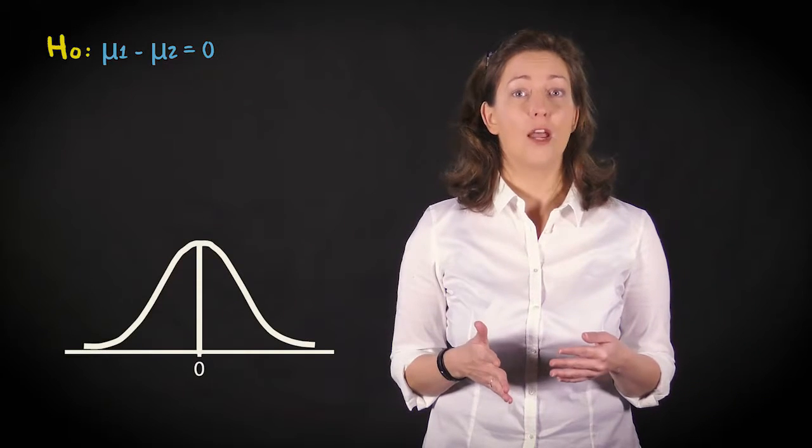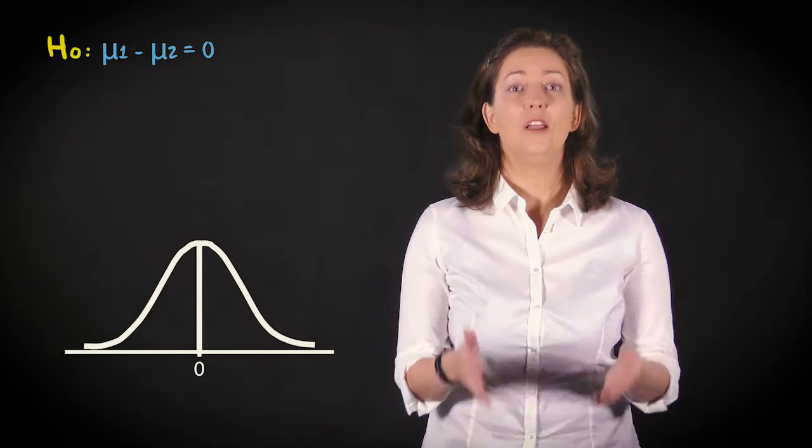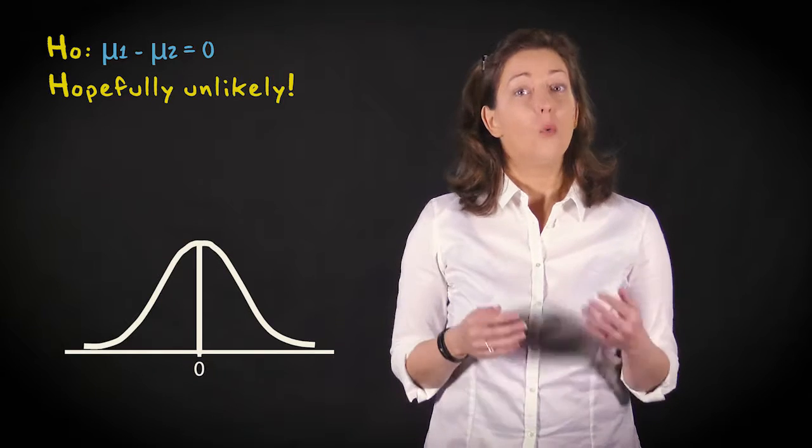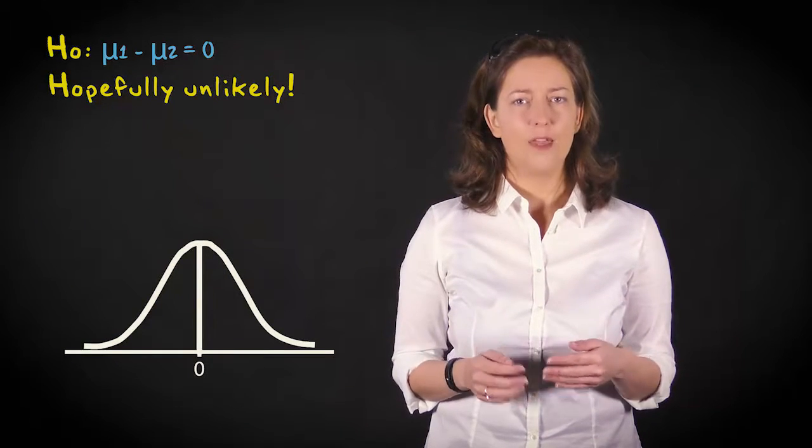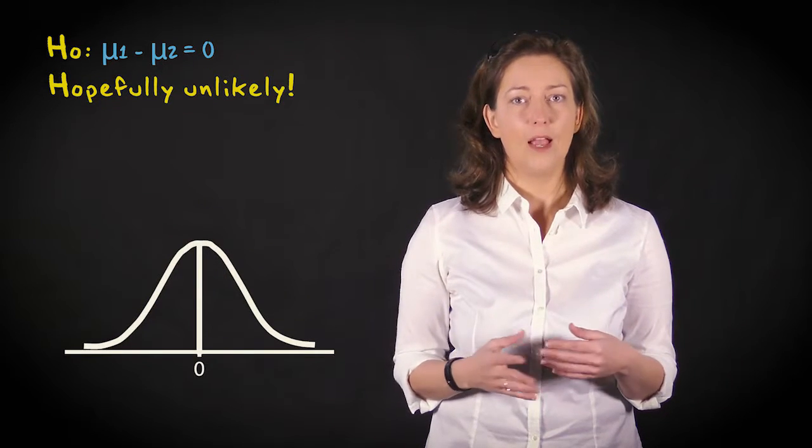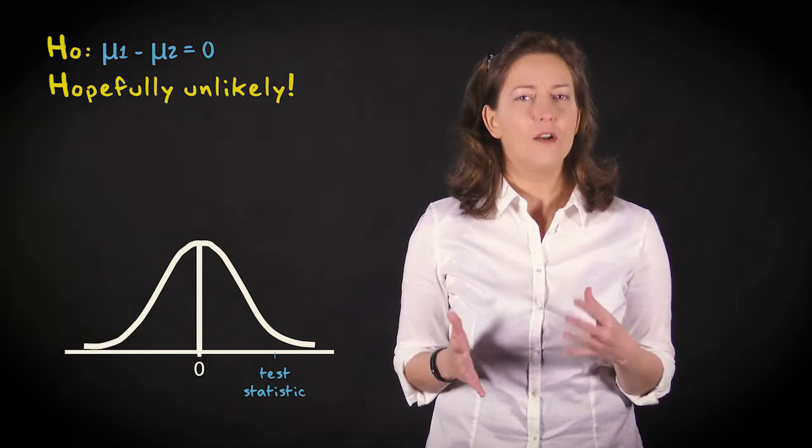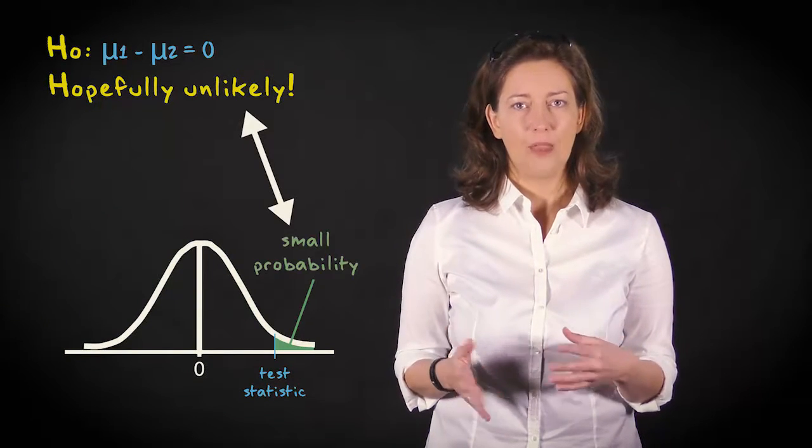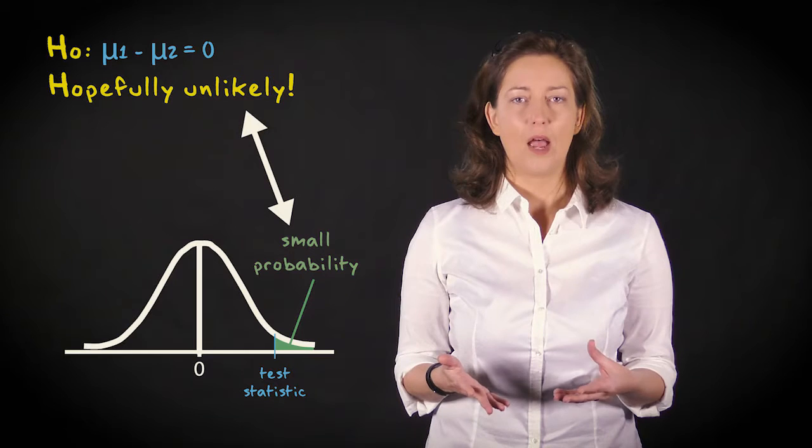So instead of arbitrarily guessing an exact value for the true difference and trying to show this guess is very likely to be true, we formulate a null hypothesis and try to show that this hypothesis is very unlikely to be true. We hope to find a difference in our sample that is so large that the value lies far in the tail, with a very small corresponding probability. This way, we can reject the null hypothesis.